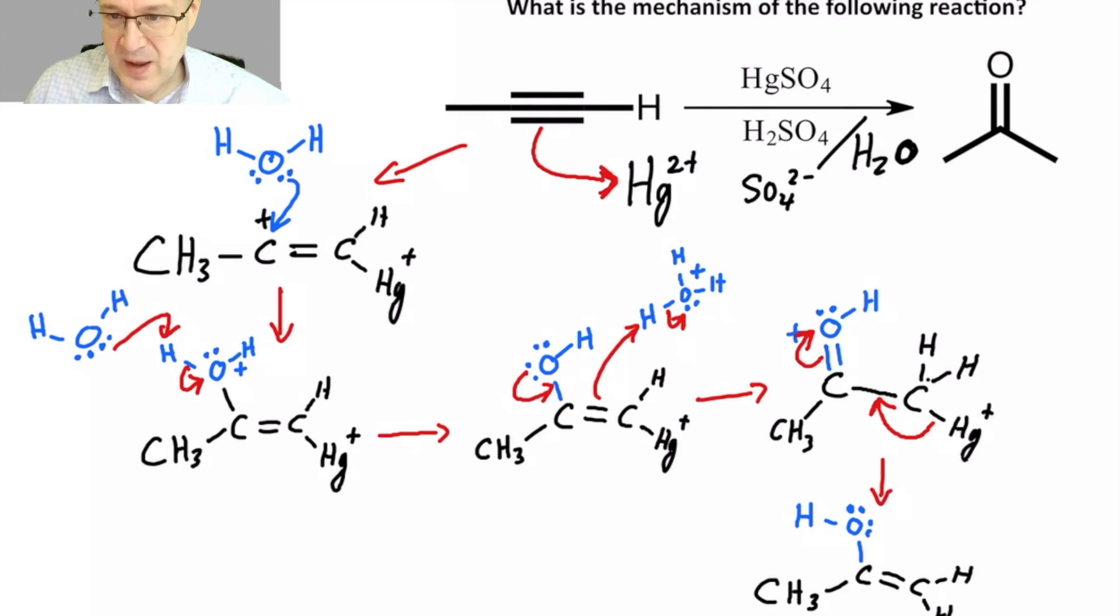Alright. So now we have what is called enol. This is enol. And enol is known to be unstable. Enol is known to want to convert to keto. So here's how it does it.